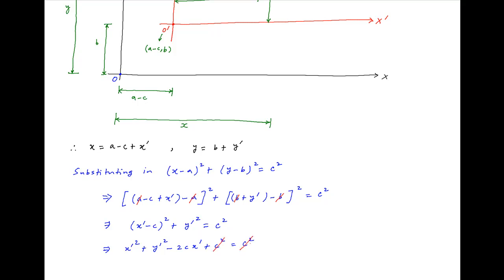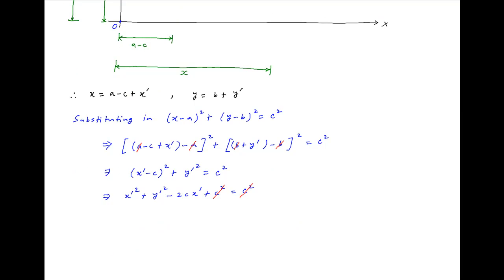C² cancels across the left-hand side and the right-hand side. Therefore, the required equation is X'² + Y'² - 2CX' = 0.